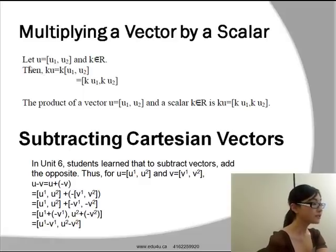Multiplying a vector by a scalar. Let u=[u₁,u₂] and k∈ℝ. Then ku=k[u₁,u₂]=[k·u₁, k·u₂]. The product of a vector u=[u₁,u₂] and a scalar k∈ℝ is ku=[k·u₁, k·u₂].